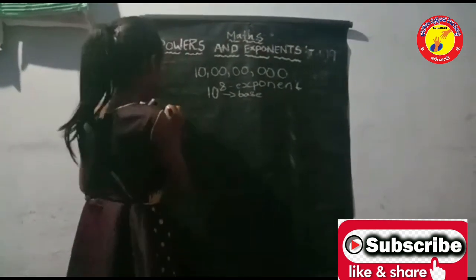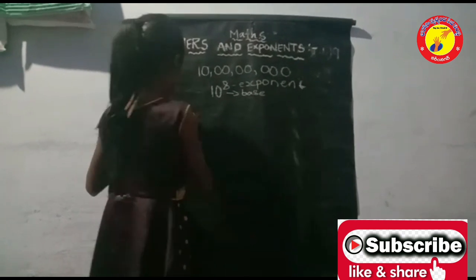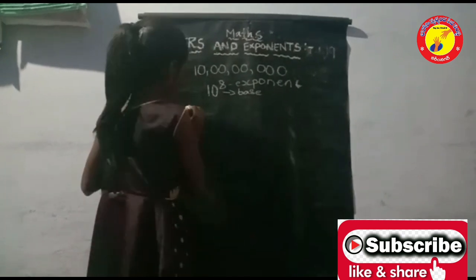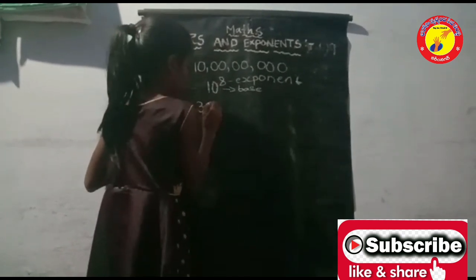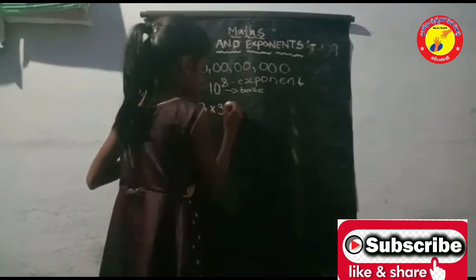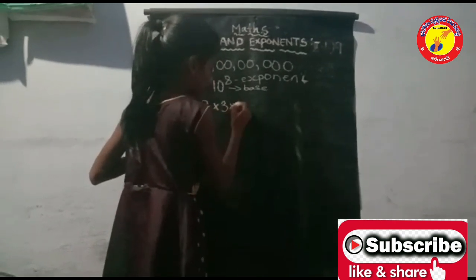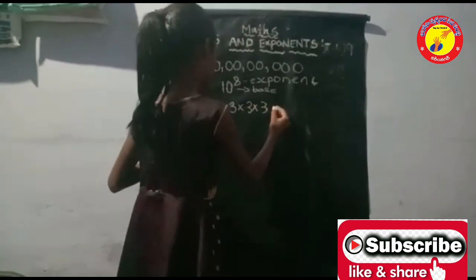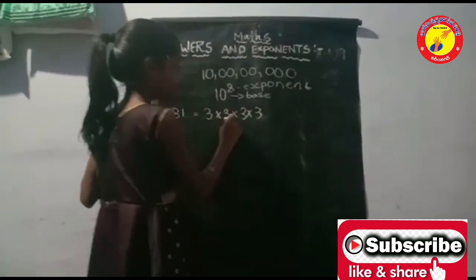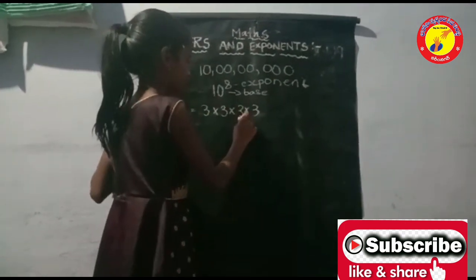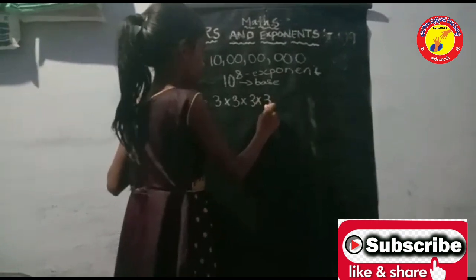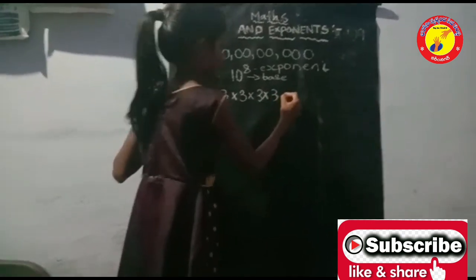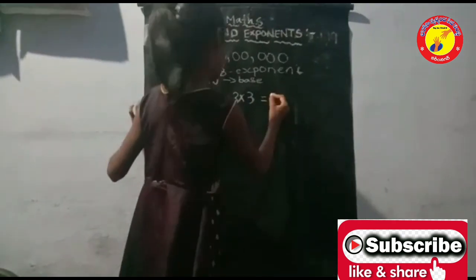We can convert 81. 81 is equal to 3 into 3 into 3 into 3. 3 into 3 is 9, 9 into 3 is 27, 27 into 3 is 81. This is called 3 raised to the power of 4.